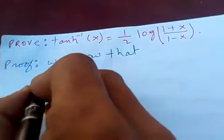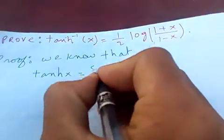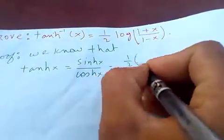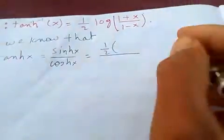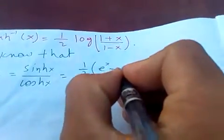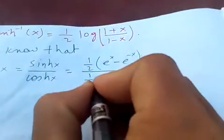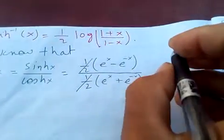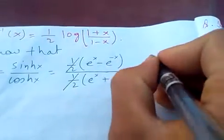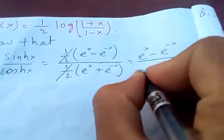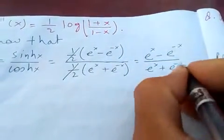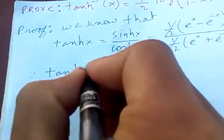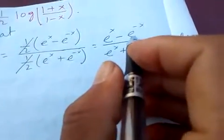We know that tanh of x is the same as sinh of x over cosh of x, which is half of e to the power x minus e to the power minus x, over half of e to the power x plus e to the power minus x. The halves cancel, giving e to the power x minus e to the power minus x over e to the power x plus e to the power minus x.